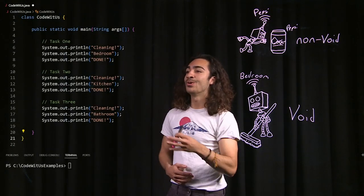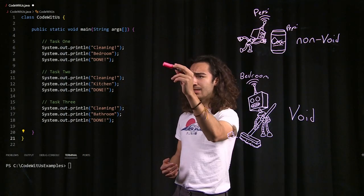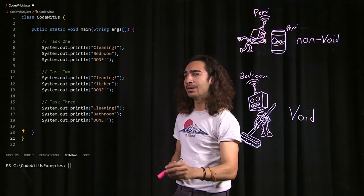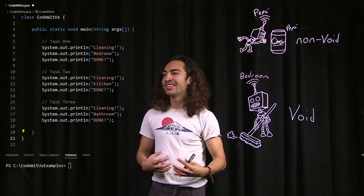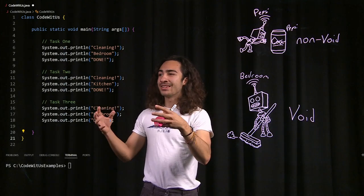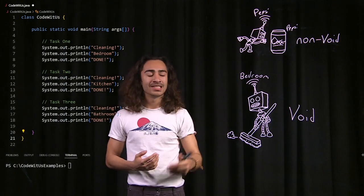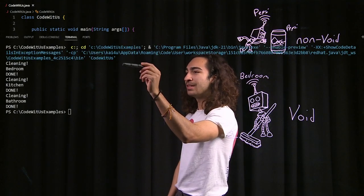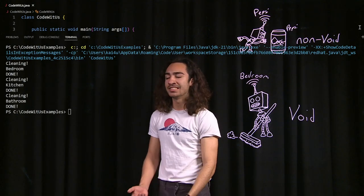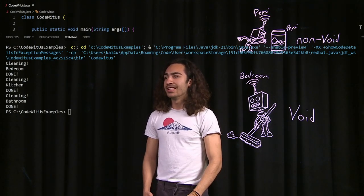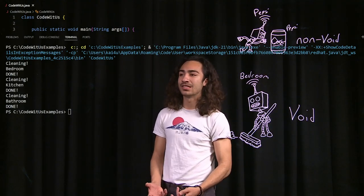Here we have our code in the main and we're not using any of our robots — we're just doing this manually. As you can see, we're cleaning our bedroom, kitchen, and bathroom. As a coder looking at this, it's repeated code over and over three times. Let's run it and see what we get. As you can see, we cleaned our bedroom, kitchen, and bathroom — it printed out exactly how you want it to. Now let's see how we can simplify this and make our code reusable instead of wasteful.